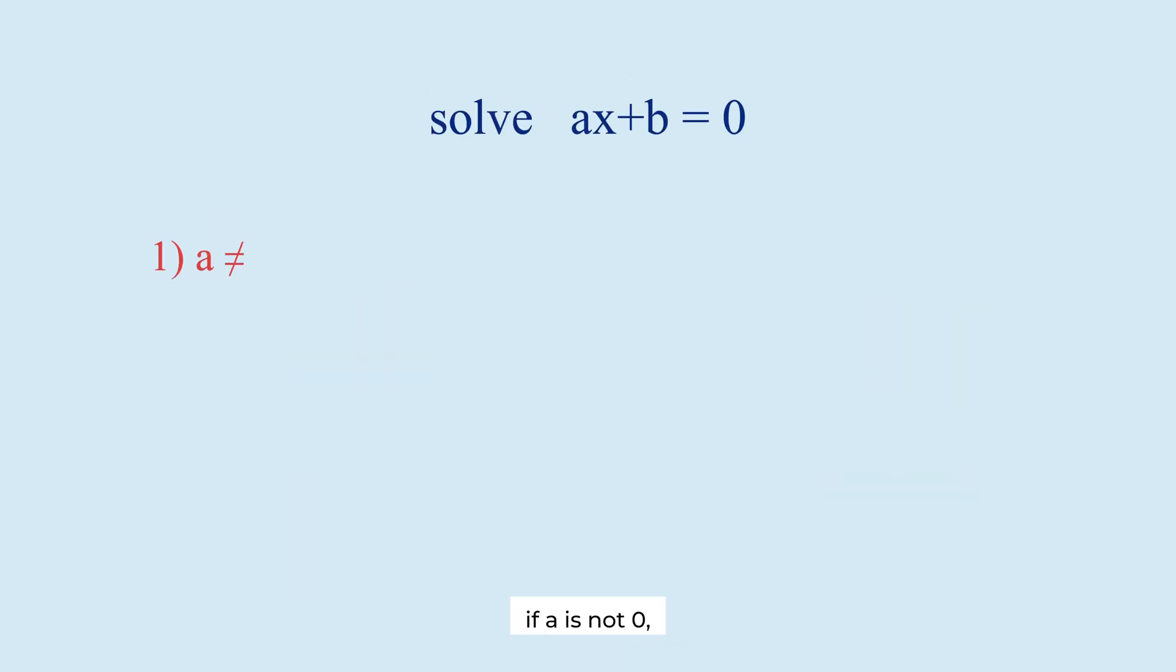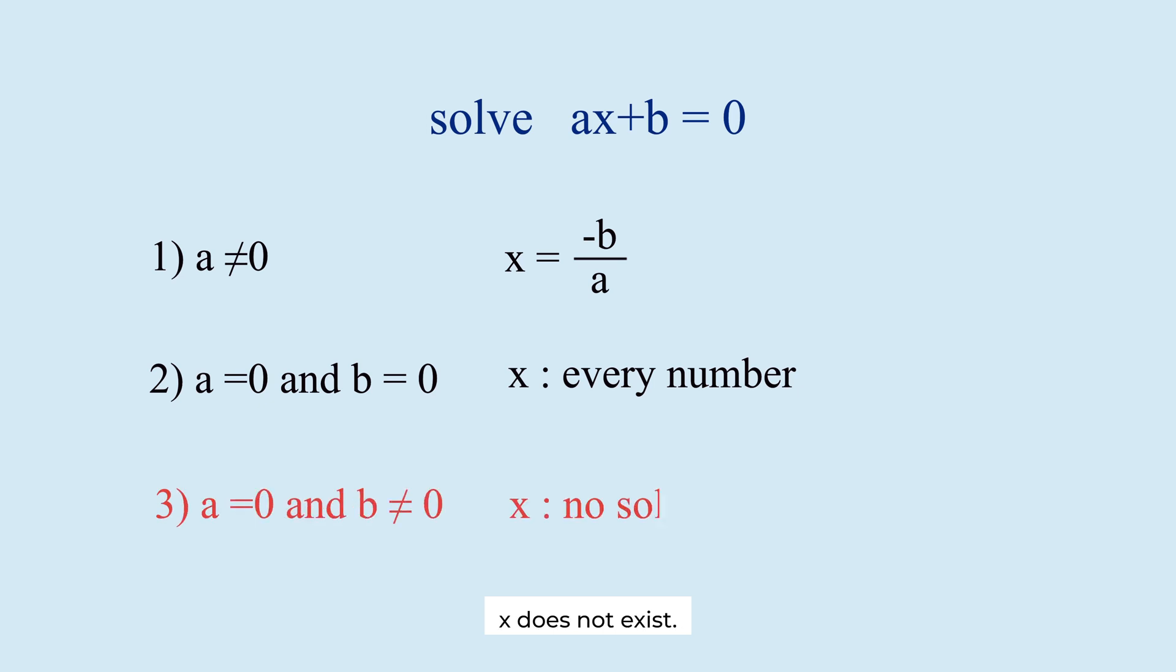Let's summarize. If a is not 0, x is minus b over a. If a and b are 0, x is every number. If a is 0 and b is not 0, x does not exist.